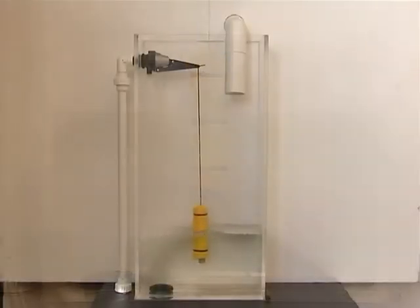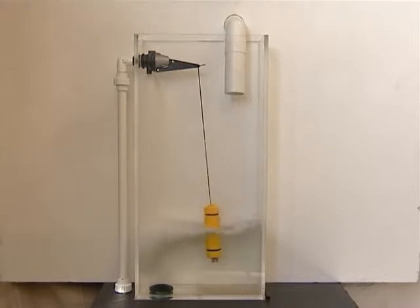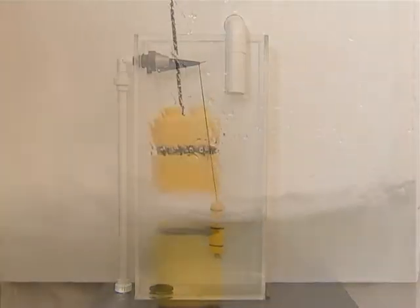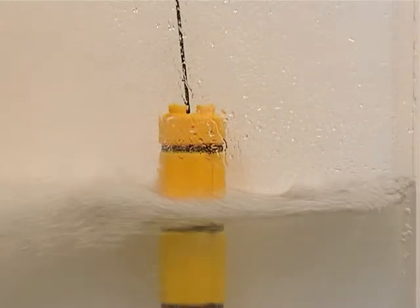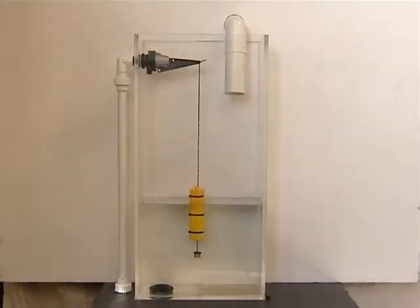The valve will run until the weighted float lifts clear of the bottom stop. The float will then rise as rainwater fills the tank and falls as the tank water is used.